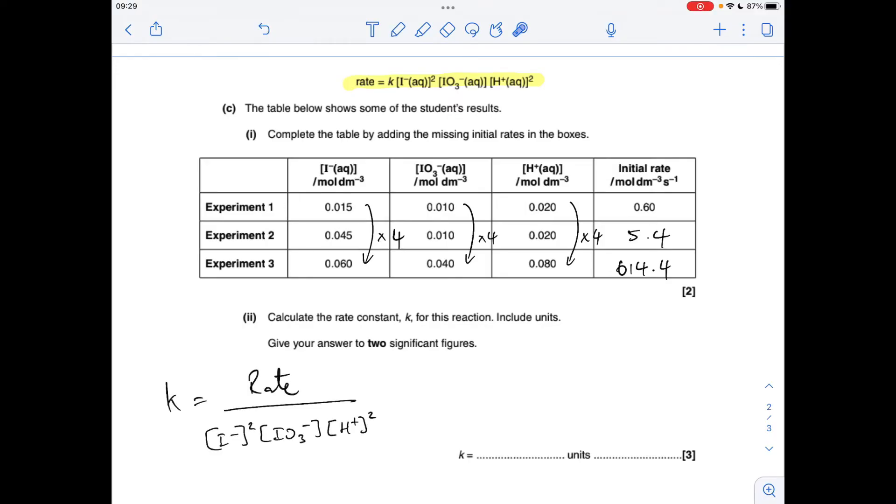And moving on to the rate constant calculation, so I've rearranged the rate equation, so we get that over that. I'm going to use the values for row 1, because they gave us all of those. So to two significant figures, I'm getting 6.7 times 10 to the 8. Okay, so we'll have a look at the units next.